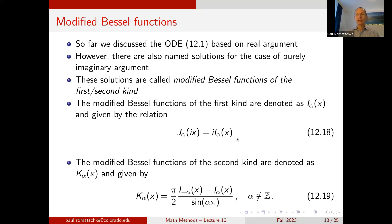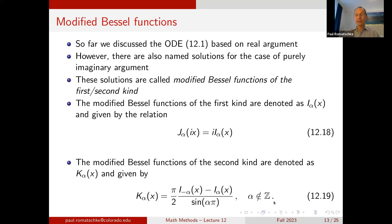Similarly, there are modified Bessel functions of the second kind, denoted K_α(x), given by a difference relation: K_α = (I_{−α} − I_α) / sin(απ), as long as α is not an integer. Whenever α is an integer, we use a limiting procedure to define K, just as we did for Y_α.